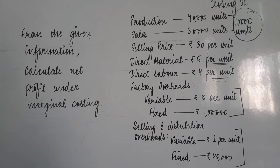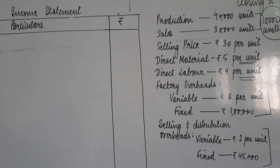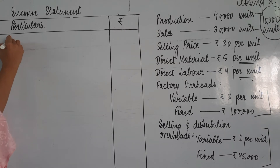Keeping the marginal cost equation in mind — sales minus variable cost is equal to contribution, or contribution equals fixed cost plus profit or minus loss — I am going to draw the format of income statement under marginal costing. The very first amount jo hum income statement mein post karte hai woh hoti hai hamaari sales.